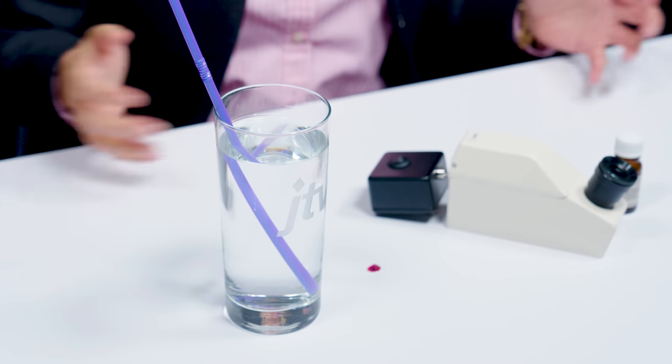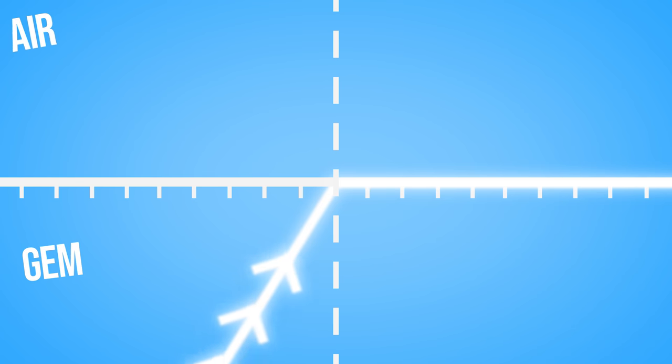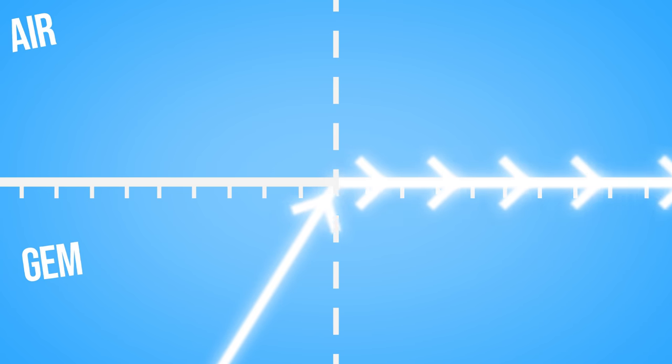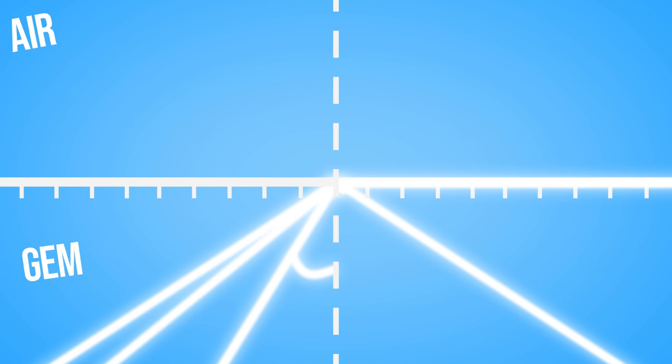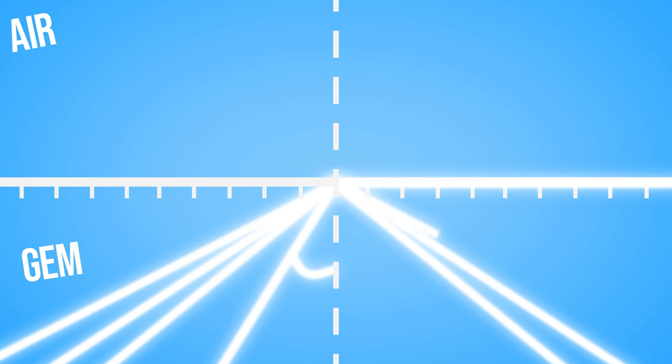That straw is now not in line. Gemstones will also do this, and each gemstone variety will bend light to a differing degree. Now there comes a point in a gemstone where the incoming light — going from the less dense medium to the denser medium — is at such an angle that the gemstone will cause it to reflect along the surface between the air and the gemstone. We call this the critical angle. Each gem has its own particular critical angle at which this happens, and any light entering at an angle greater than that critical angle is totally internally reflected back inside the gemstone.